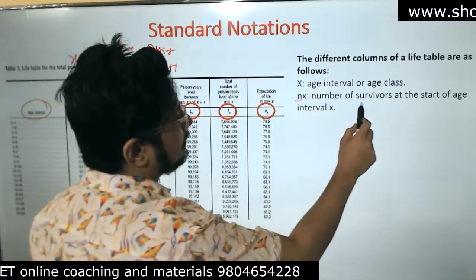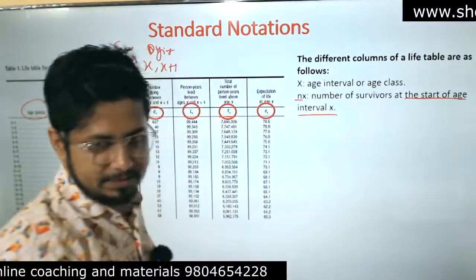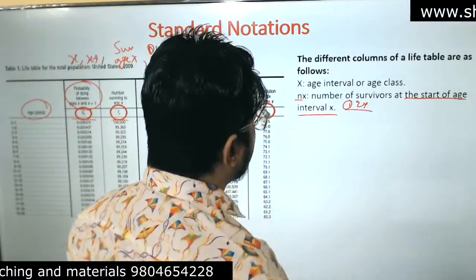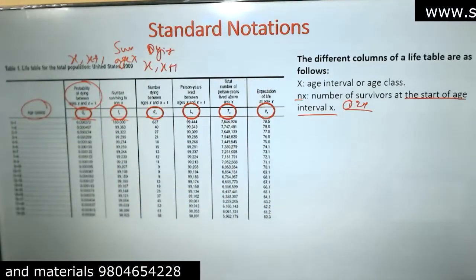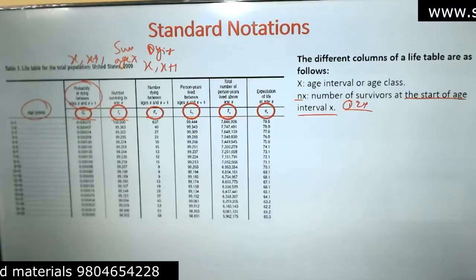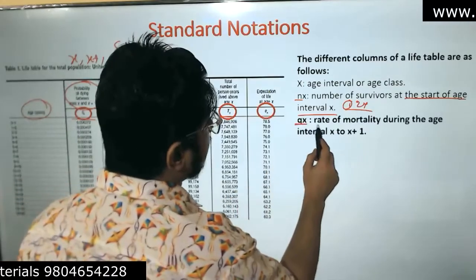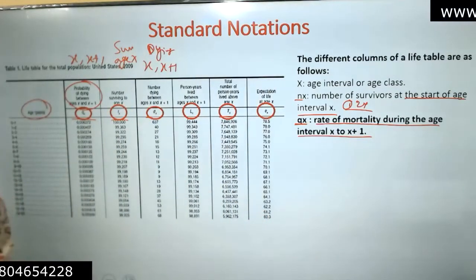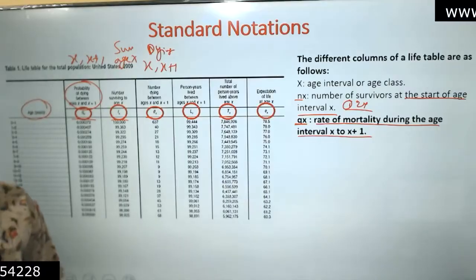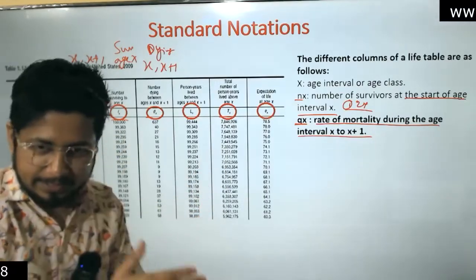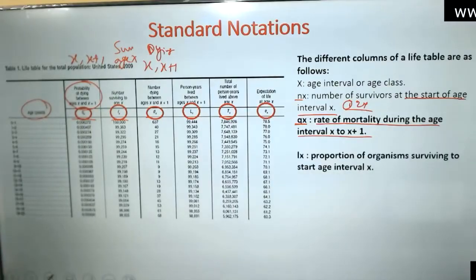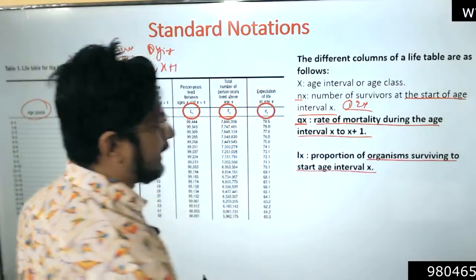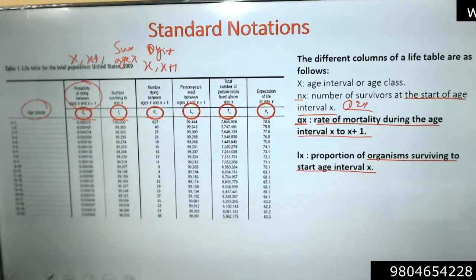nx is the number of survivors at the start of an age interval x — the interval could be one year or two years. qx is the rate of mortality during the age interval x to x+1. So if you start at age 10 and go to 11, what is the rate of mortality between age 10 and 11 — that is qx.